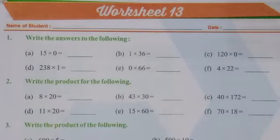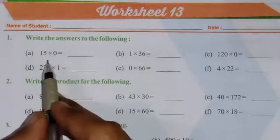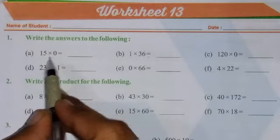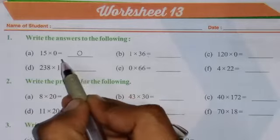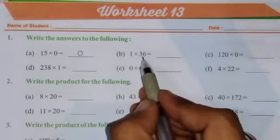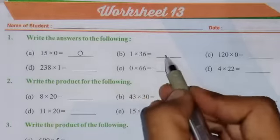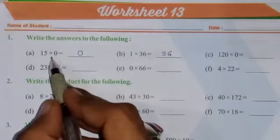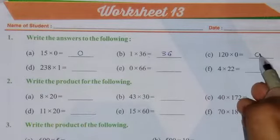A very interesting worksheet this time is given to multiply the numbers using some properties. Here you can see we have to multiply 15 by 0. As you all know, if we have to multiply any number with 0, the answer will be 0. And if we multiply any number by 1, the answer will be the same number, it means 36. Here again the same property - any number multiplied by 0, answer will be 0.